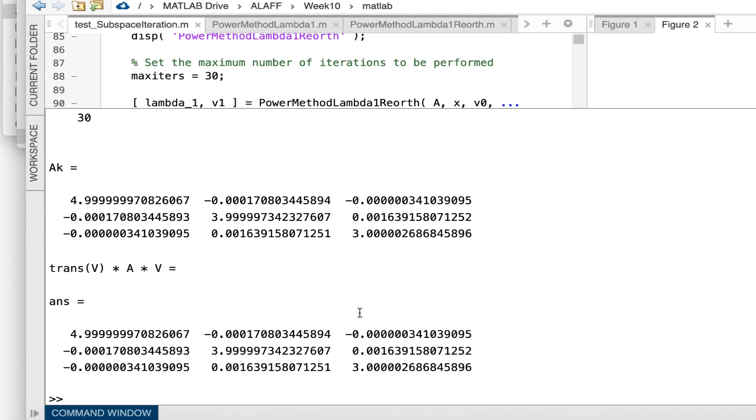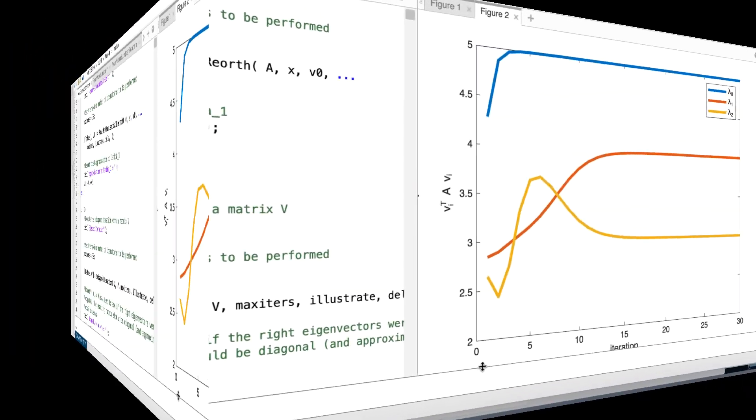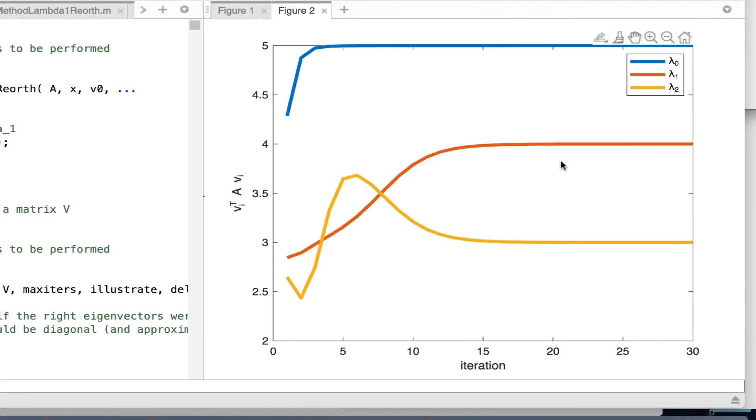And when it's all done, we end up with a graph of how this convergence to the various eigenvalues happens. We're tracking three eigenvectors and three eigenvalues here, and they're plotted here. And indeed, they converge to the three largest eigenvalues, which is what we expect.